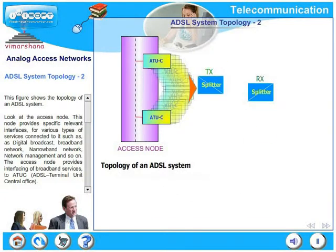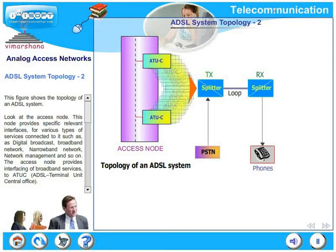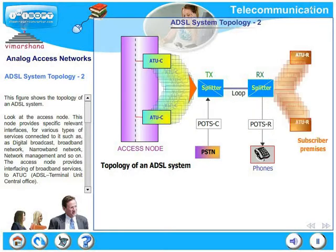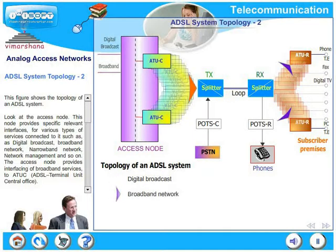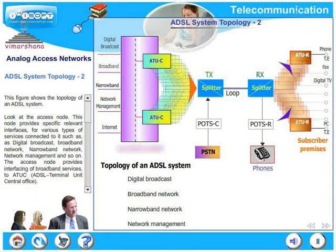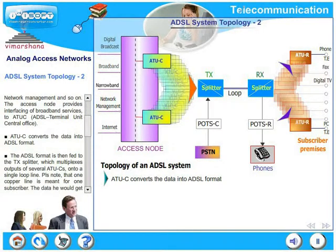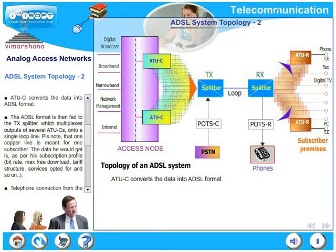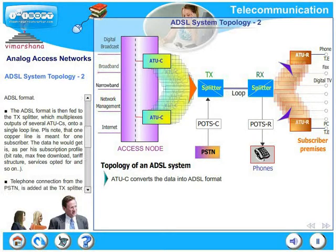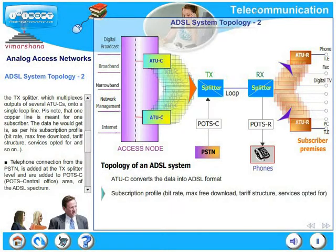Let us look at ADSL topology a little further. The access node provides specific relevant interfaces for various types of services connected to it, such as digital broadcast, broadband network, narrowband network, network management, and so on. The access node provides interfacing of broadband services to ATUC. ATUC converts the data into ADSL format, which is then fed to the TX splitter, which multiplexes outputs of several ATUCs onto a single loop line. Note that one copper line is meant for only one subscriber.